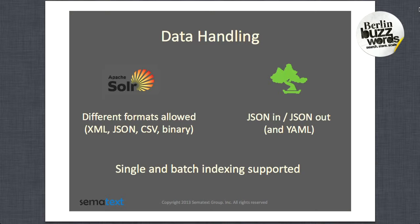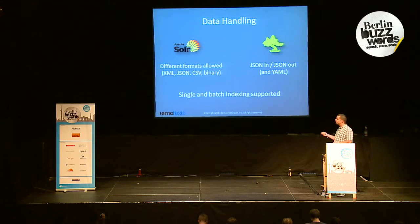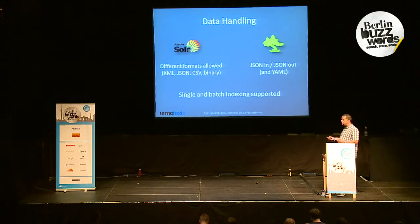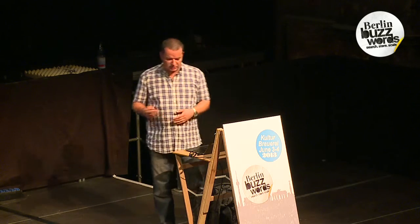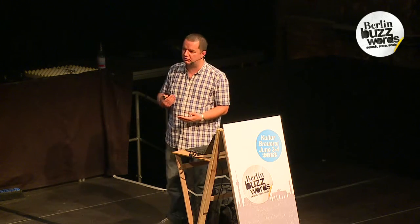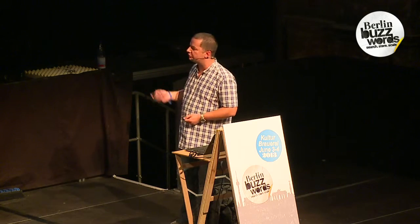Data handling is also very important. In case of Solr, we can use different formats — XML, JSON, comma-separated, and binary responses, for example Java binary and PHP binary. In Elasticsearch, it's JSON in, JSON out, and YAML. Both provide single and batch indexing, with Elasticsearch allowing use of the update API in batch processing in the newly released 0.90.1 version.